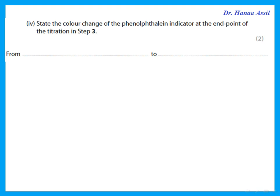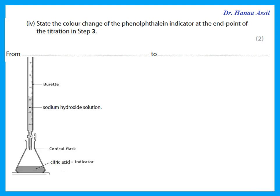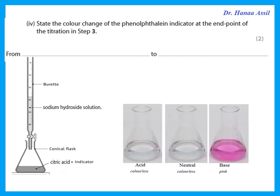State the color change of phenolphthalein indicator at the end point of the titration. In the flask we had citric acid with the indicator, and we were adding sodium hydroxide from a burette. Originally the solution was colorless. At the end point, we stop at the first drop that turns permanently pink.